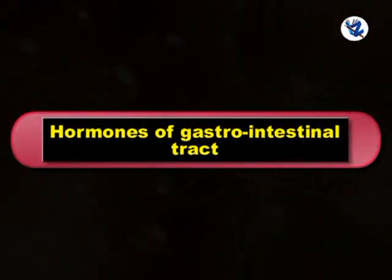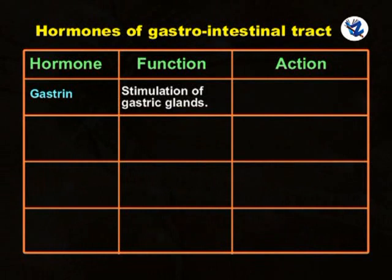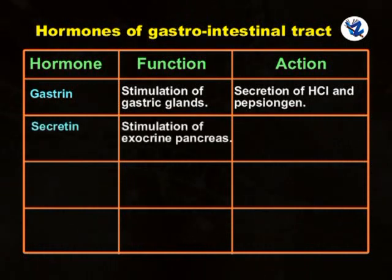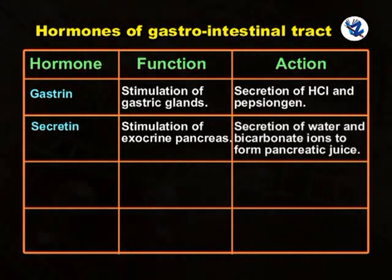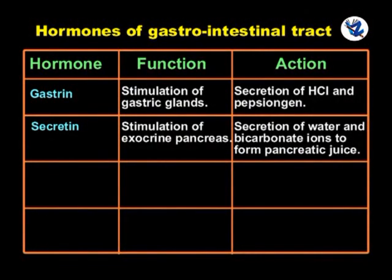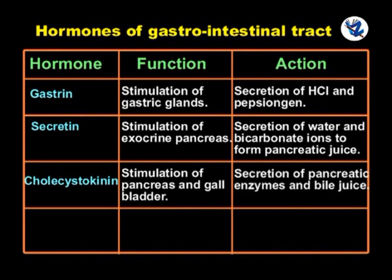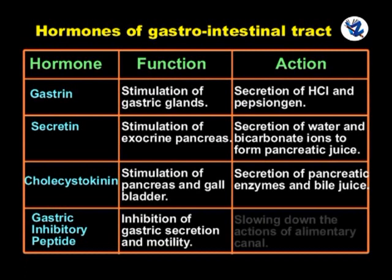Now the hormones of the gastrointestinal tract. Gastrin stimulates gastric glands for secretion of hydrochloric acid and pepsinogen. Secretin acts on the exocrine pancreas and stimulates secretion of water and bicarbonate ions to form pancreatic juice. Cholecystokinin stimulates pancreas and gallbladder, helping secretion of pancreatic enzymes and bile juice. Gastric inhibitory peptide inhibits gastric secretion and motility, thus slowing down the actions of the alimentary canal.